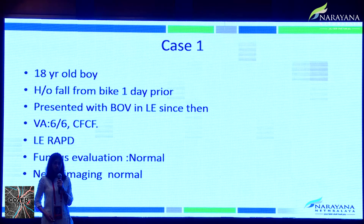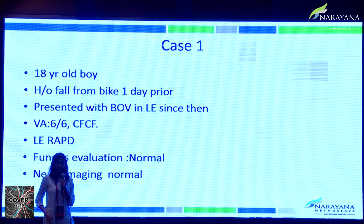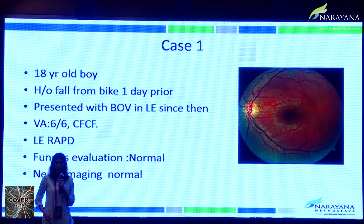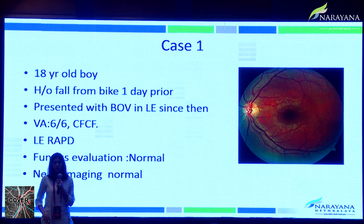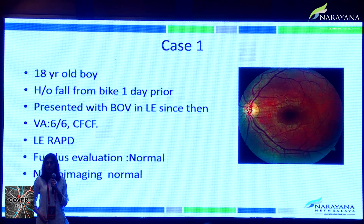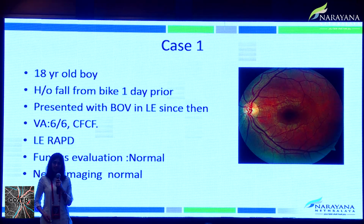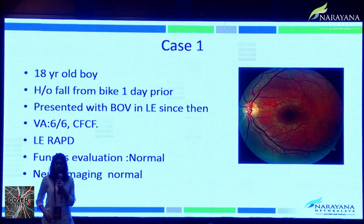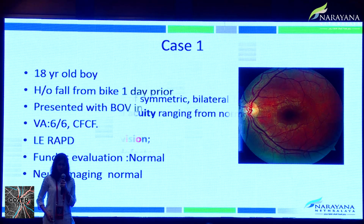Moving on to our first case — an 18-year-old boy who presented with a history of a fall from a bike one day prior, presenting with blurring of vision, visual acuity of counting fingers close to face in the left eye, and RAPD in the left eye. Fundus evaluation was normal, as was neuroimaging. After explaining the treatment modalities, the patient was treated with 1 gram of IV methylprednisolone for 3 days, followed by a tapering dose of oral systemic steroids. At 6-week follow-up, his vision had improved to 6/60 with onset of optic disc pallor.